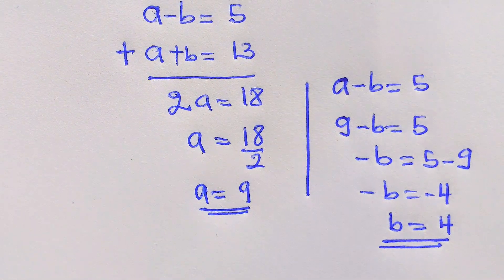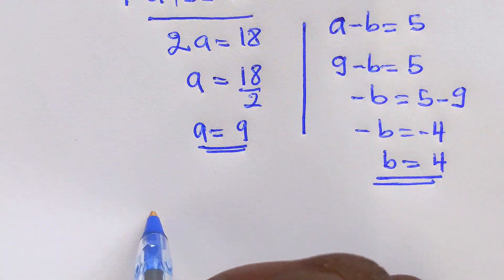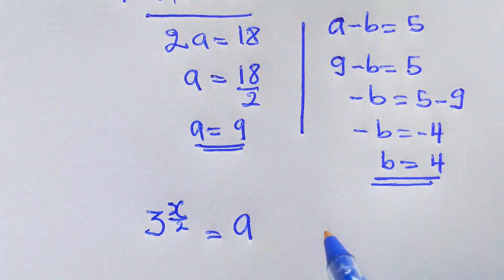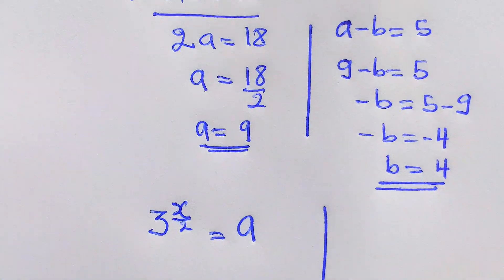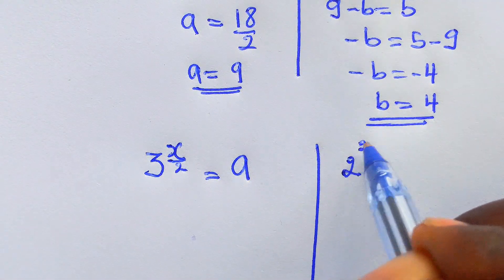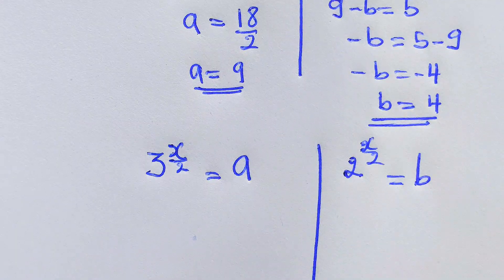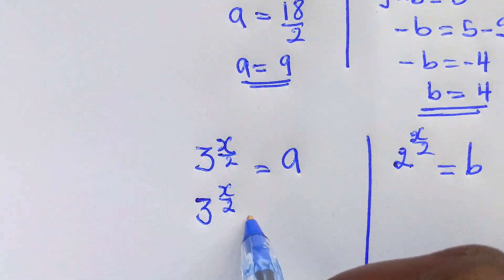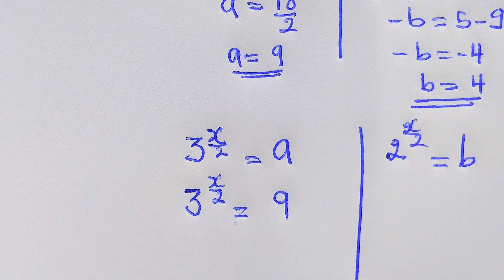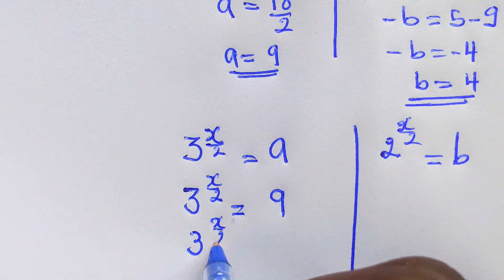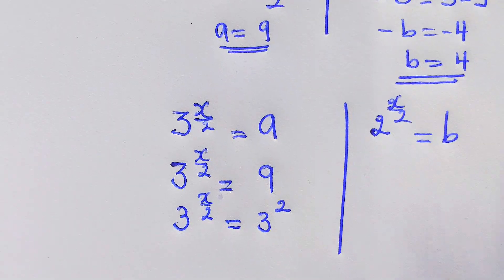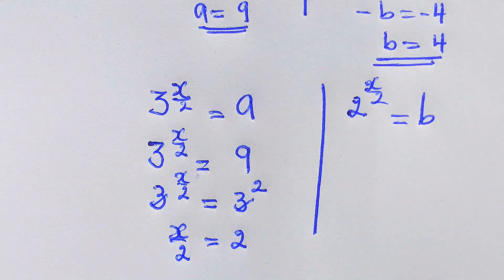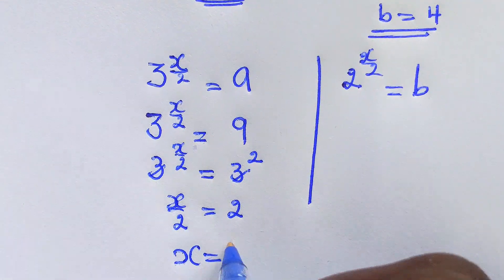We said that 3 power (x over 2) equals a, which is 9. Since 9 equals 3 squared, we have 3 power (x over 2) equals 3 squared. With the same base, x over 2 equals 2, so x equals 4.